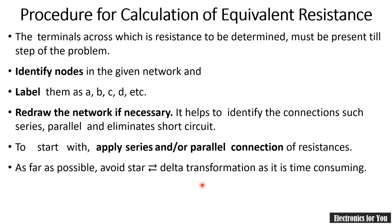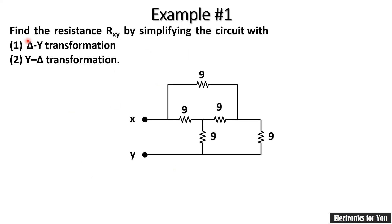Our example number one: find the resistance Rxy — the resistance between terminals X and Y — using delta-to-star transformation and star-to-delta transformation. If you don't know about star-delta transformation, please watch our previous videos, parts three and four, where I explained the formulas and how to solve problems using star-delta transformation. We will first solve using delta-to-star, then solve the same problem using star-to-delta.